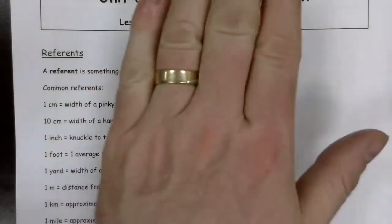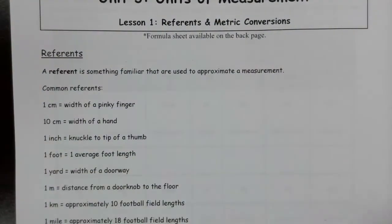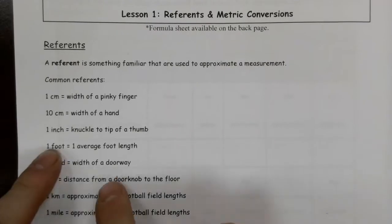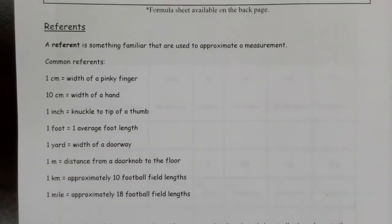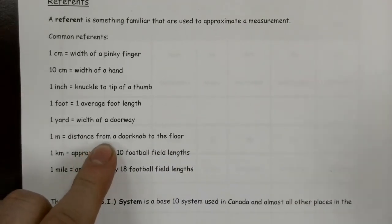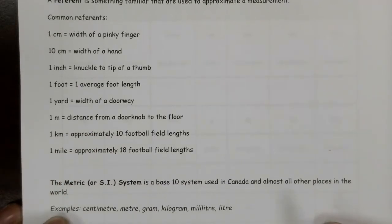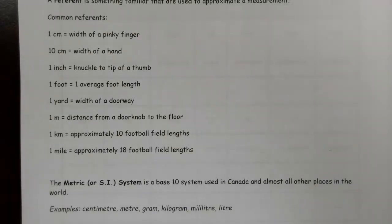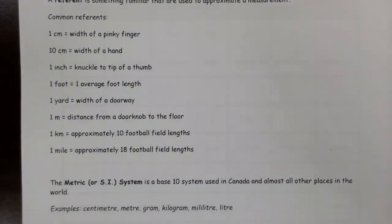For example, a centimeter is roughly the width of a pinky finger — not exactly, and we know that varies from person to person, but it gives you a sense of how big a centimeter is. Ten centimeters is about the width of your hand. An inch is the length from your knuckle to the tip of your thumb. One foot is the average length of a foot. A yard is about the width of a doorway. A meter is roughly the distance from the floor to the doorknob. One kilometer is about 10 football field lengths and one mile is about 18 football field lengths. These are things we use to give ourselves a mental image of how long, heavy, or voluminous something is — familiar references we use to communicate and estimate.